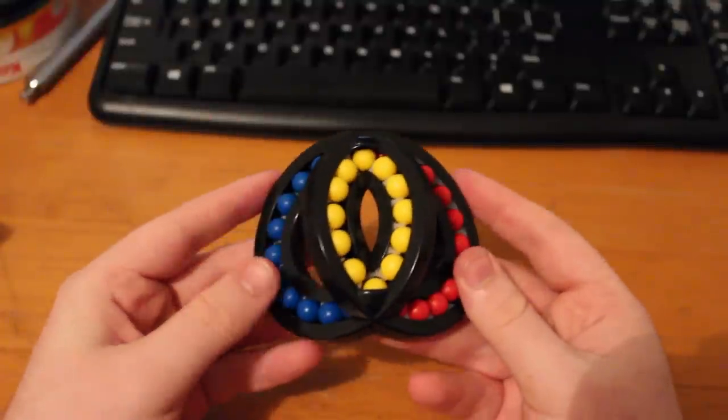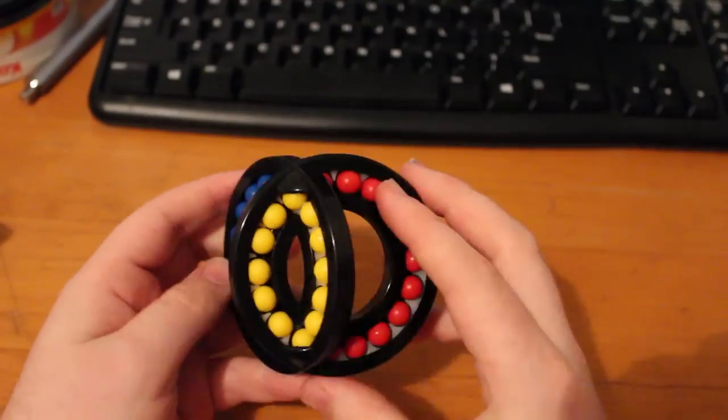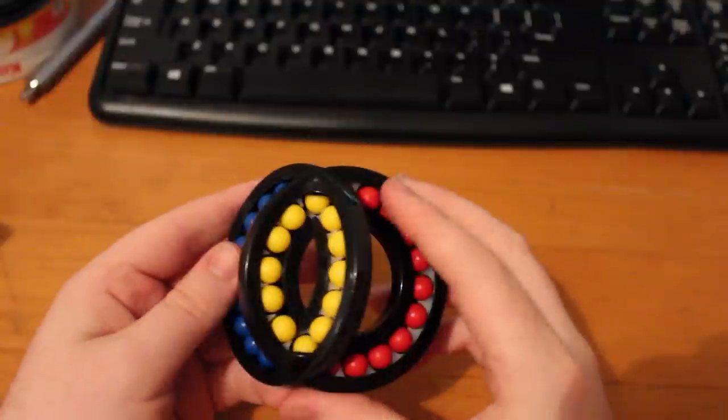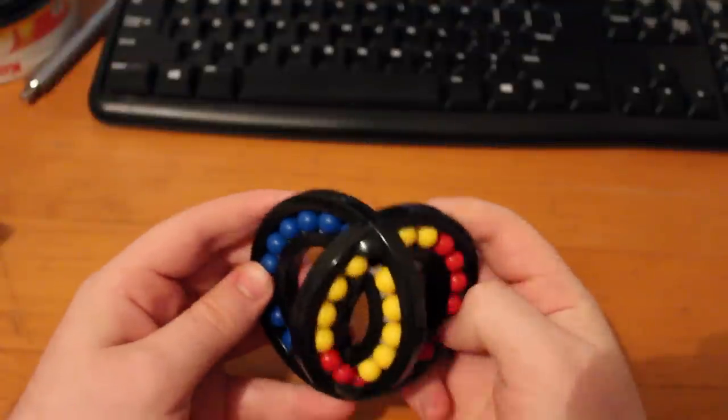A couple years earlier, the Rubik's Rings were released. These are a pseudo-3D puzzle, with a couple dozen plastic beads in yellow, blue, and red. These are caught in two intersecting rings, which can be rotated through to mix up the beads.